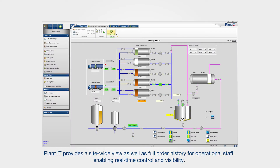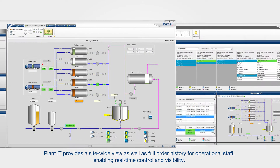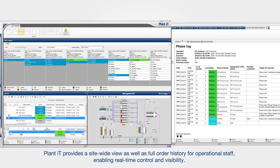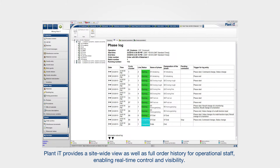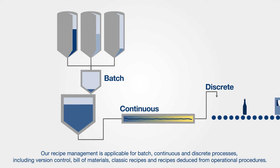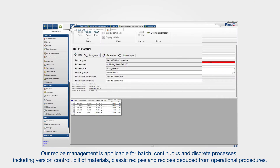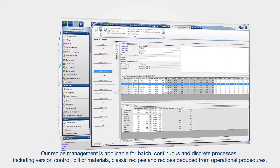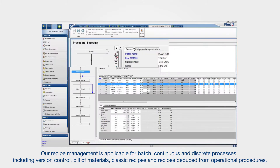Plant IT provides a site-wide view as well as full order history for operational staff, enabling real-time control and visibility. Our recipe management is applicable for batch, continuous and discrete processes, including version control, bill of materials, classic recipes and recipes deduced from operational procedures.